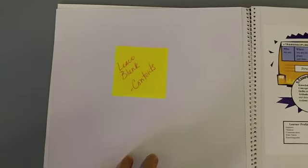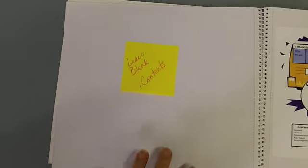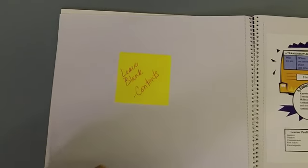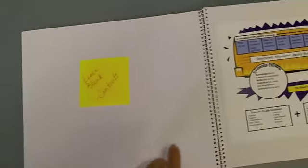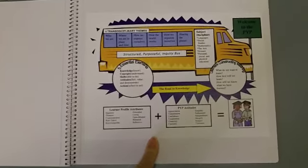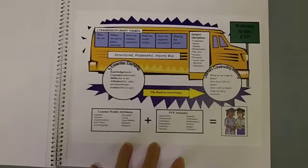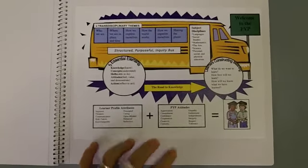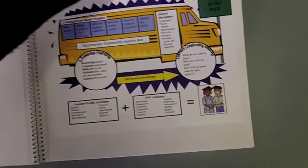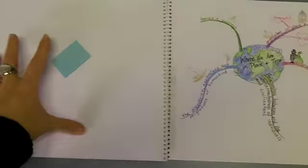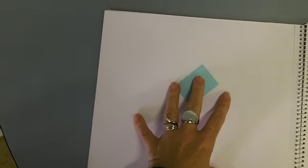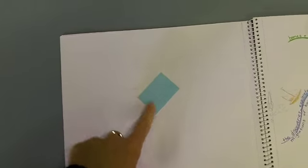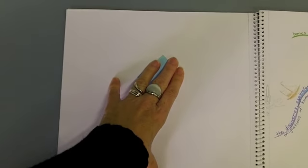Leave this first page blank — you'll be putting a cover in there later on. Leave this next page blank; it's going to be for a contents page that we will do later, maybe on the computer. You've been given a handout — we'll talk about this more later, but this is the page for that. This is about the essential elements of the PYP. Leave this page blank as well; we'll be explaining that later. I've put stickies here just to remember not to put anything on this page.